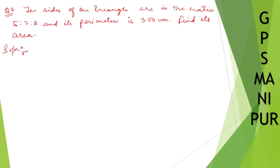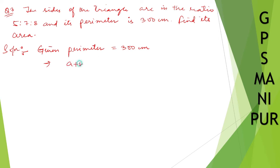The sides of the triangle are in the ratio 5:7:8 and its perimeter is 300 centimeters. Find each area. The ratio is given as 5:7:8 and perimeter is 300 centimeters. Perimeter is equal to a plus b plus c, which are the three sides of the triangle, equal to 300 centimeters.